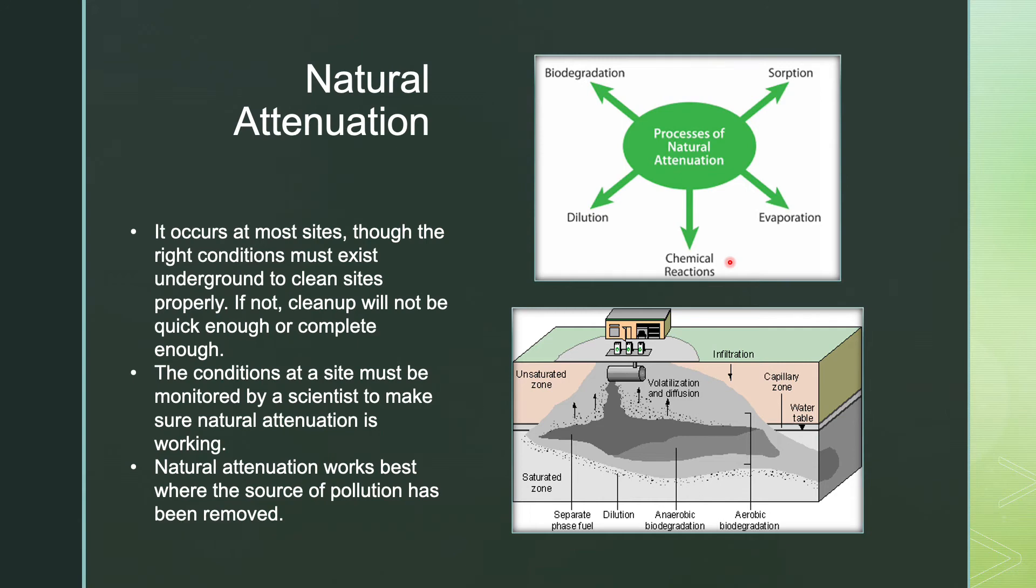And so basically MNA, or the monitored natural attenuation, works best where the source of contamination has been removed. So, for example, any waste that's buried underground needs to be dug up and disposed of properly first or removed using other available cleanup methods. And then this other picture down here is kind of the main picture that popped up, and it's a little blurry, but it kind of shows the basics of natural attenuation and how it works.